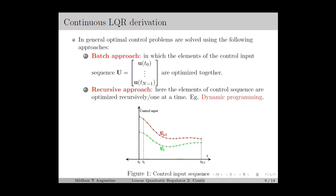In most optimal control problems, we cannot have an analytical solution — that is, a closed-form expression for the optimal control input — which is difficult to obtain in most cases. So we can only try to find a numerical solution, which may not exist in some cases. However, when it comes to LQR, we can find an analytical solution because of the quadratic and convex nature of the cost function and the linear nature of the system. Next, we will discuss how to derive the analytical solution for LQR, mainly following the dynamic programming approach.